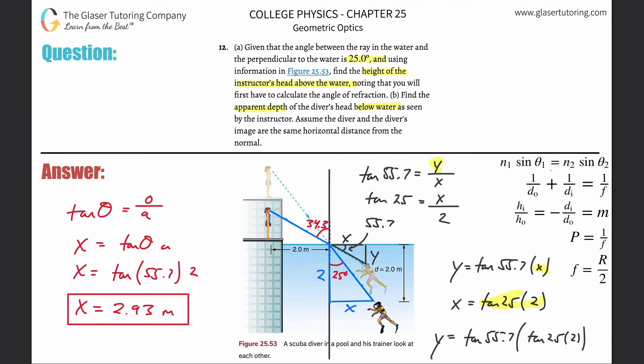So Y will be equal to the tangent of 55.7 multiplied by the tangent of 25 times 2. So tan 55.7 times tan 25 times 2. About 1.37 or so. So Y here is about 1.37 meters. That's the depth, the apparent depth below the water line.